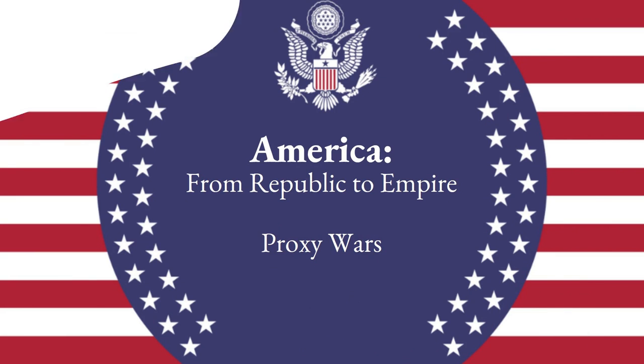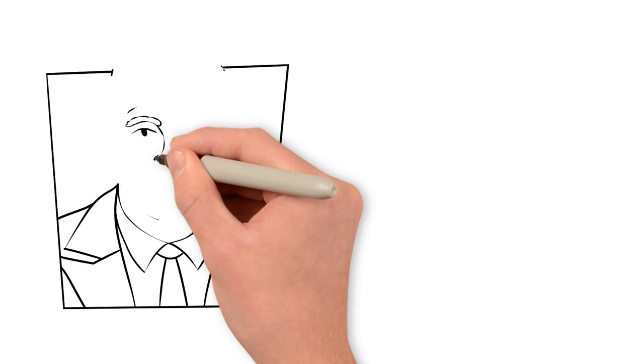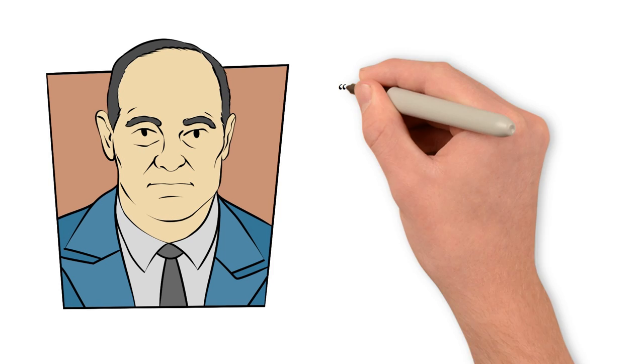Proxy Wars. In February 1946, George Kennan sent a telegram to the State Department that painted a foreboding picture of the Soviet Union.